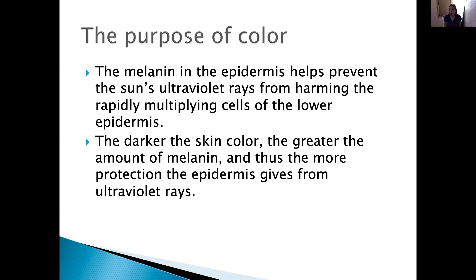We're talking about the color of our skin. The melanin in the epidermis — as you know, that's a layer of the skin — helps prevent the sun's ultraviolet rays from harming the rapidly multiplying cells of the lower epidermis. That's basically what gives us the color of our skin. Also, the darker the skin color, the greater the amount of melanin, and that gives us more protection from the rays of the sun.